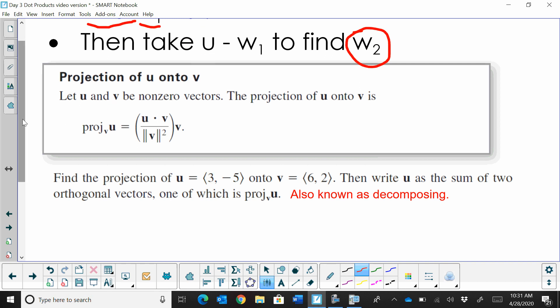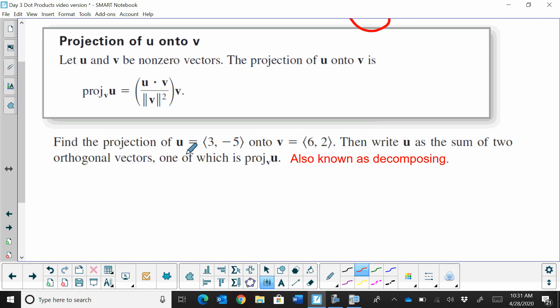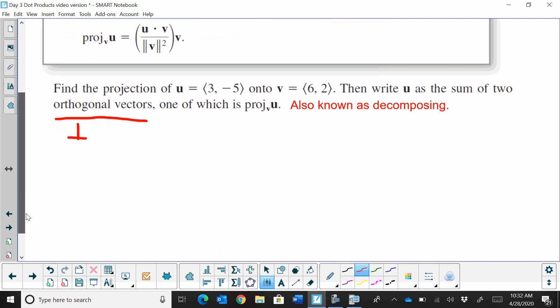So let's try this formula. We're going to find the projection of u onto v for where u is (3, -5) and v is (6, 2). So we've seen that picture. Then we're going to write u as the sum of these two orthogonal vectors. What do we mean by orthogonal? We mean they're perpendicular. So you're making a right angle or a turn. So to find our w sub 1, this formula gives us w sub 1, or that first vector.